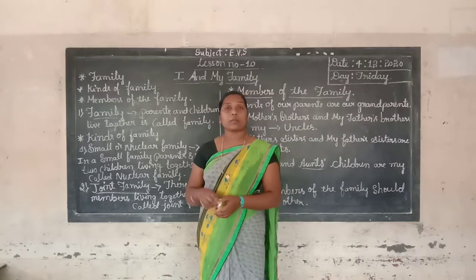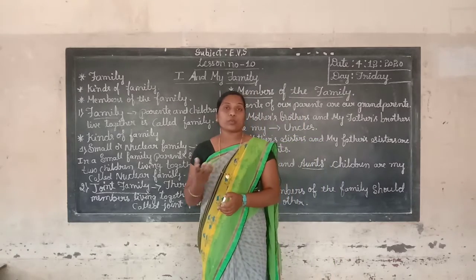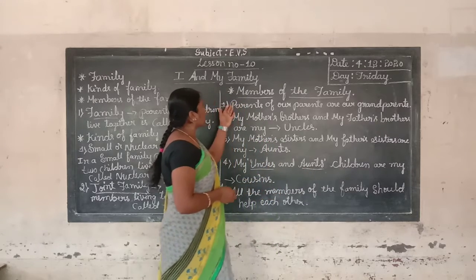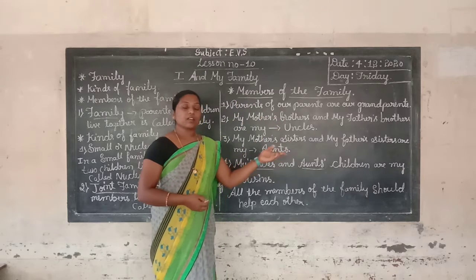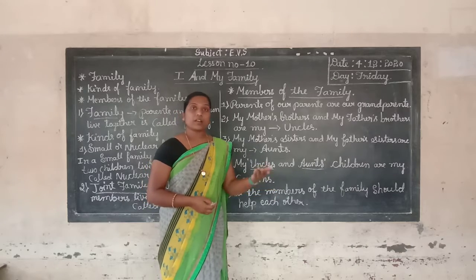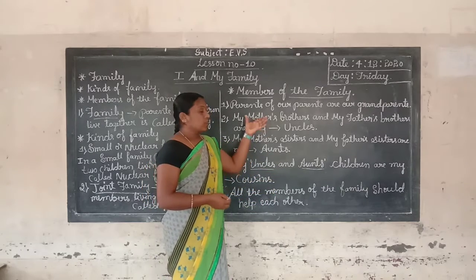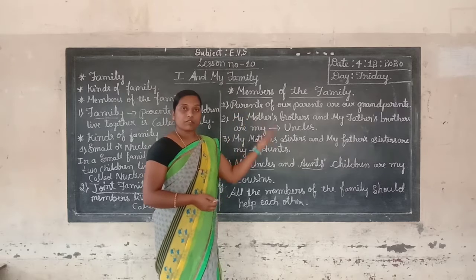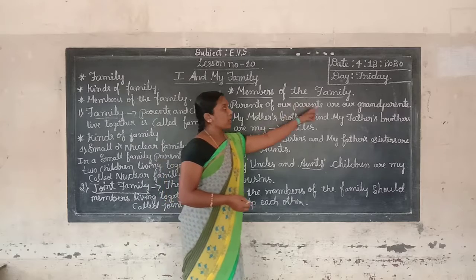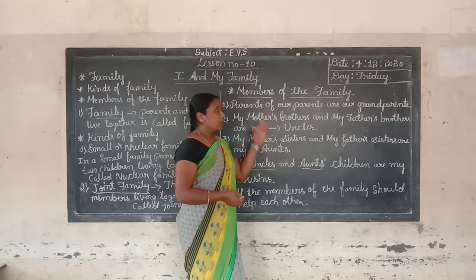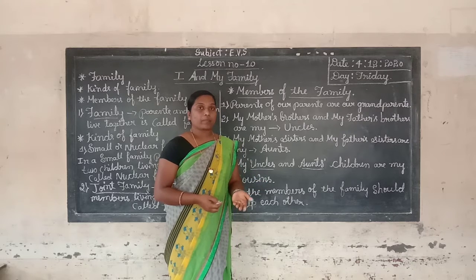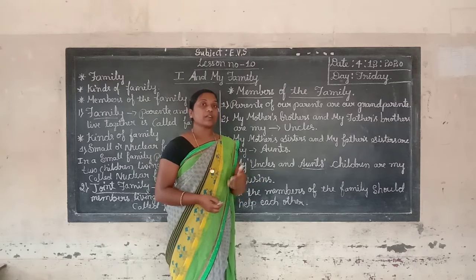So next we go to learn the members of the family. Which members live together? Members of the family are father, mother, auntie, uncle, grandpa, grandma. Parents of our parents are our grandparents. Mother's mother is our grandma, and father's mother is also our grandma. Father's father is our grandpa, and mother's father is also our grandpa.